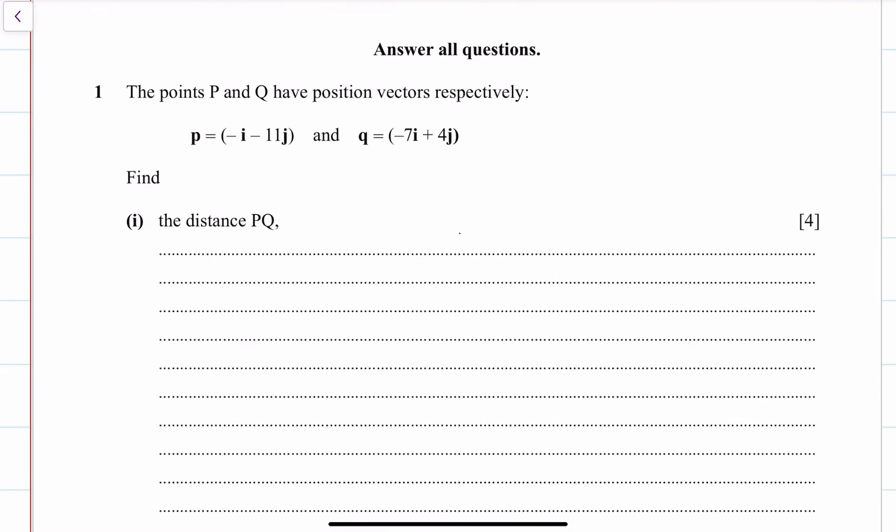This is a vectors question from the AS1 specimen paper, CCA's specimen paper. The points P and Q have position vectors p equals minus i minus 11j and q equals minus 7i plus 4j.